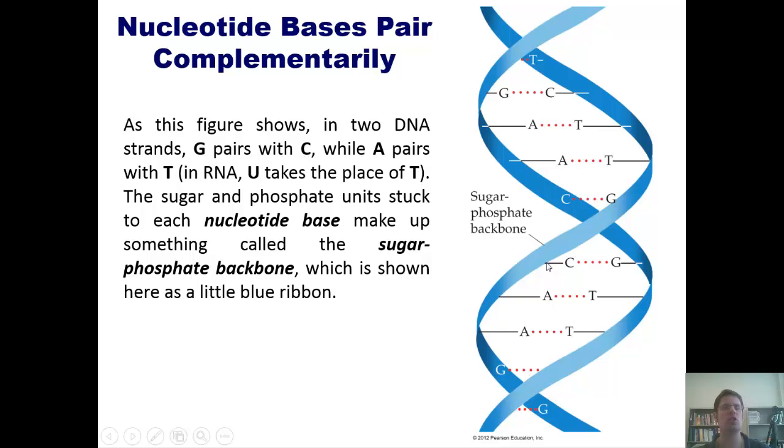Now, as this figure shows, in two DNA strands, G pairs with C, while A pairs with T. In RNA, U takes the place of T. The sugar and phosphate units stuck to each nucleotide base, which I showed you two slides ago, make up something called the sugar phosphate backbone, which is depicted here using this cute little winding blue ribbon.